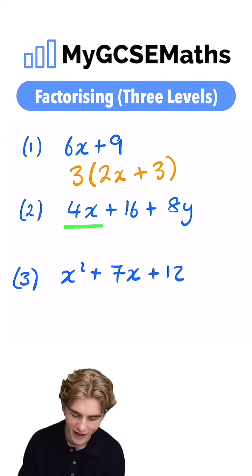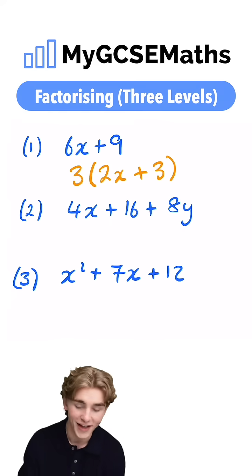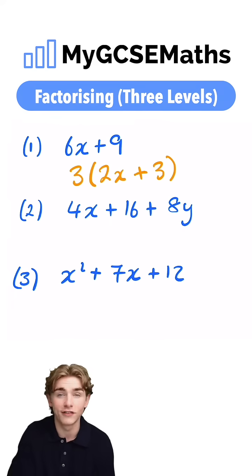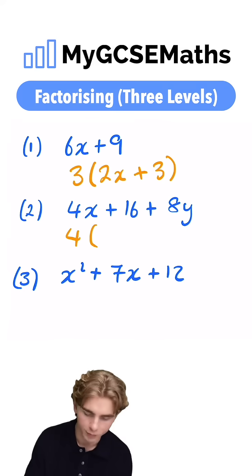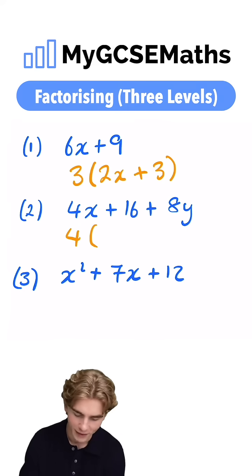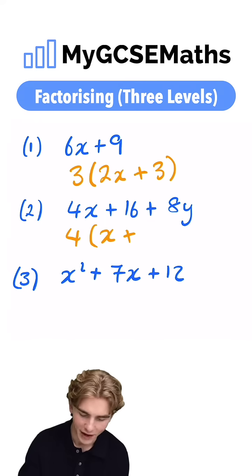Next, we want to factorize 4x plus 16 plus 8y. Guys, again, we're going to need a number which goes into all of these. 4 is going to be a number which goes into all of them. Now, what do you multiply by 4 to get 4x? You multiply it by x. What do you multiply by 4 to get 16? You multiply it by 4.